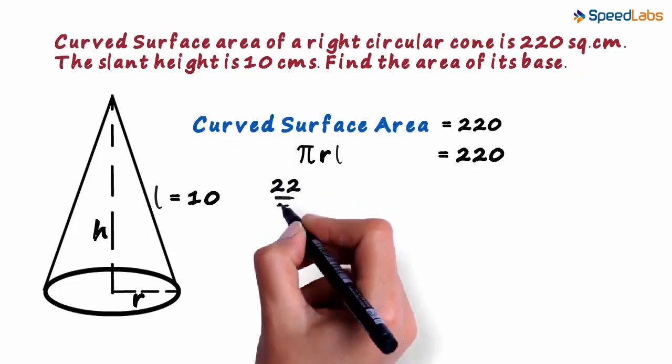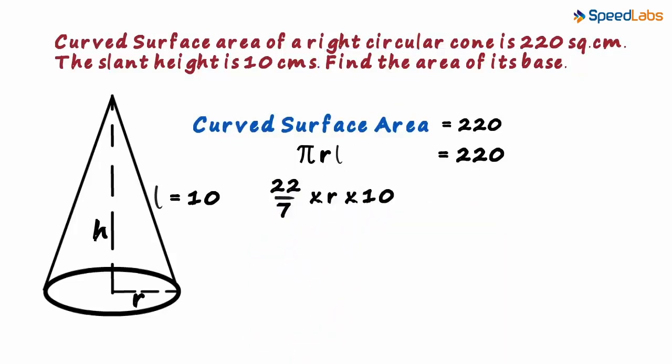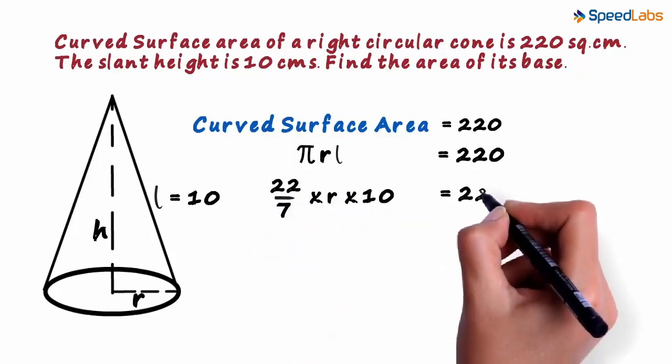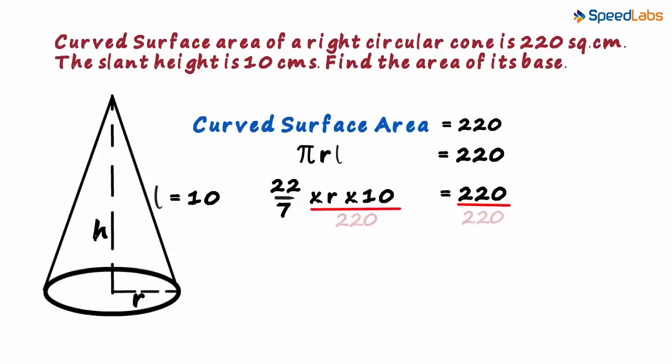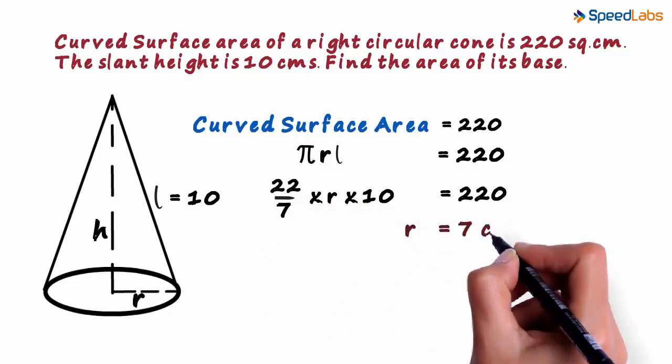So 22 by 7 multiplied by R multiplied by 10 will equal 220. Dividing both sides by 220, we get the value of R as 7 centimeters.